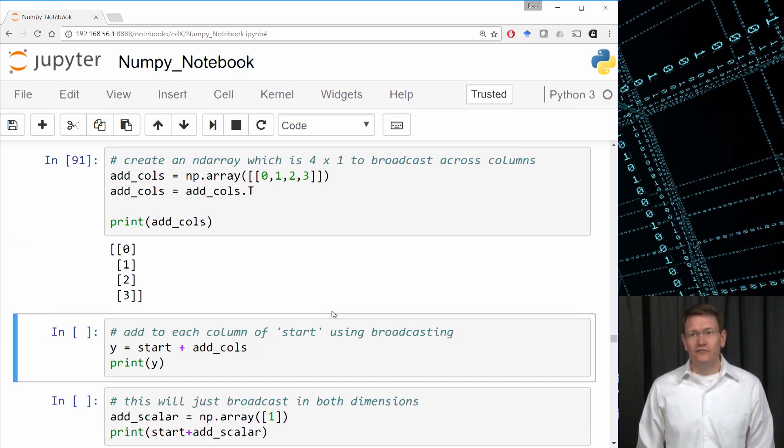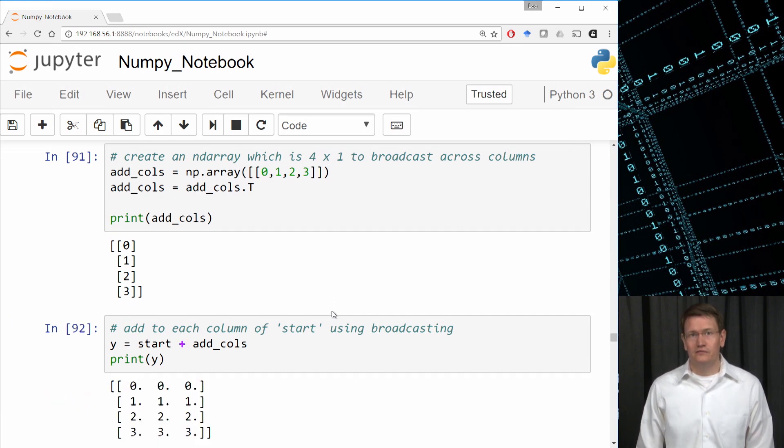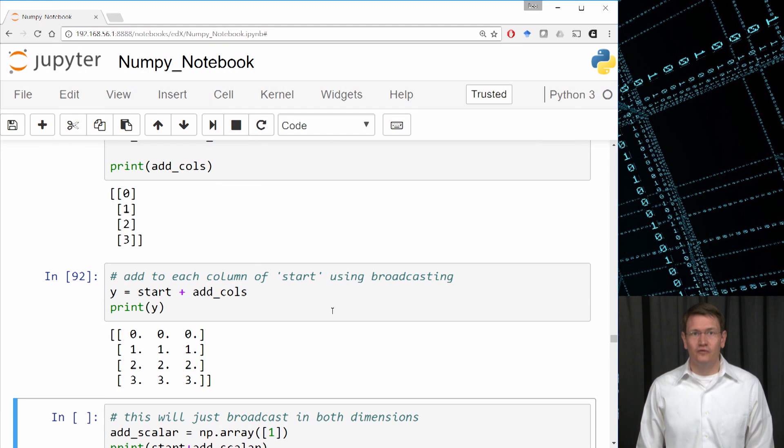Now I'll add this 4x1 array to start, and because I'm using broadcasting, I should get back the result, which has the values from addCols in each column of start.